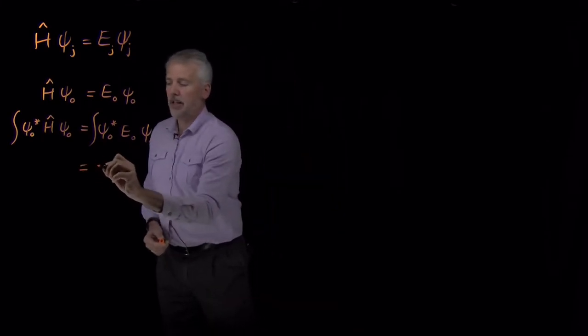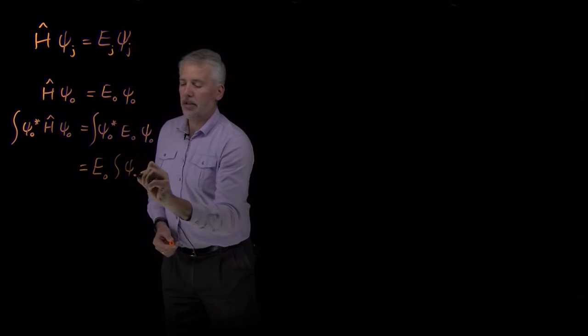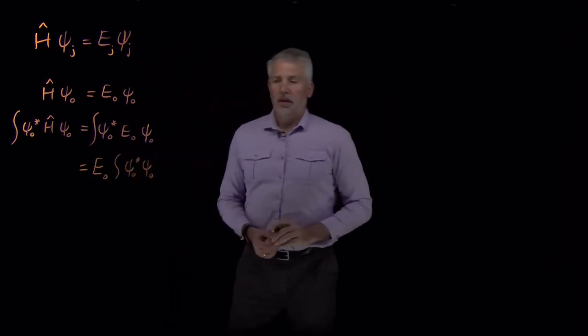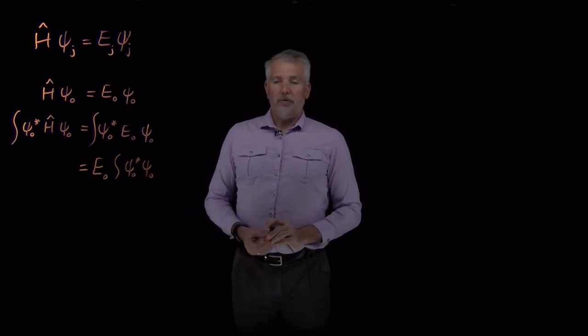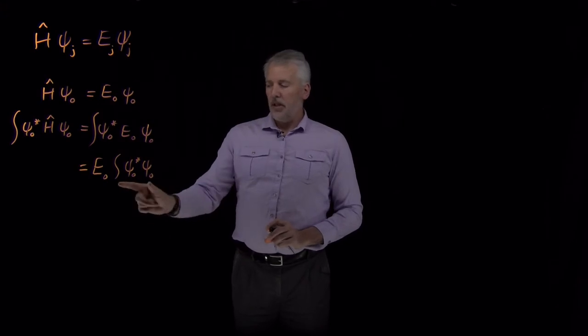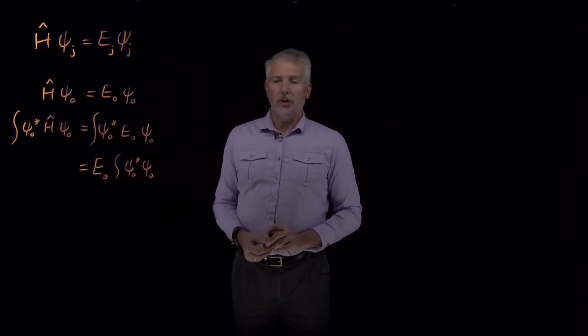I can pull that energy out of the integral. So this is E₀ times the integral of a wave function complex conjugate times itself. This looks familiar. We know if the wave function itself is normalized, if we have normalized wave functions, then this term is going to be equal to 1.